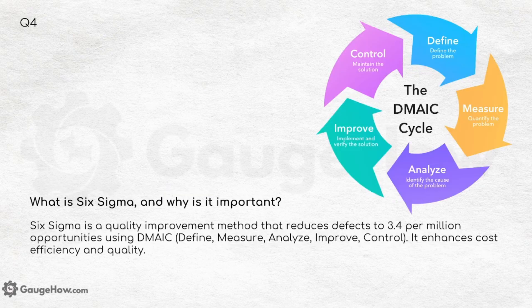What is Six Sigma and why is it important? Six Sigma is a quality improvement method that reduces defects to 3.4 per million opportunities using DMAIC — that is define, measure, analyze, improve, control. It enhances cost efficiency and quality.